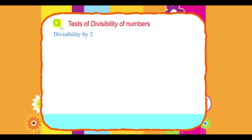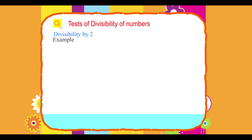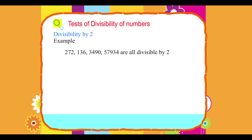Divisibility by 2: A number is divisible by 2 if the last digit is 0, 2, 4, 6, or 8. Example: 272, 136, 3490, and 57934 are all divisible by 2.